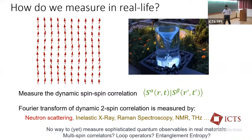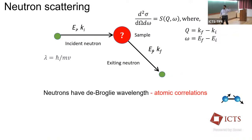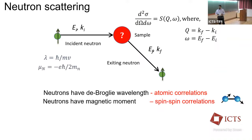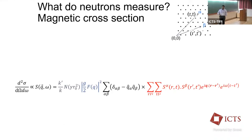In neutron scattering, neutrons have a mass, so they have a de Broglie wavelength, and when they scatter you get atomic correlations — you can look at phonons. However, neutrons also have a magnetic moment, so the spins of the neutrons interact with the spins of the material and we can also get spin-spin correlations. The Fourier transform of that is what we really measure. We get two kinds of information at the same time: the phonons at high Q and the magnetic information at low Q.